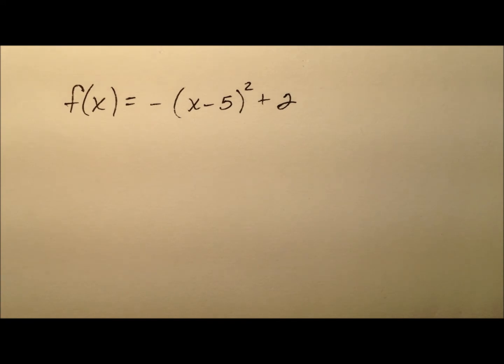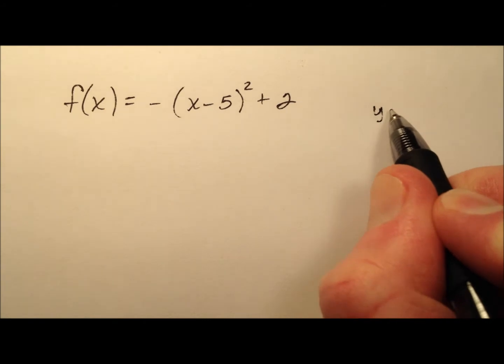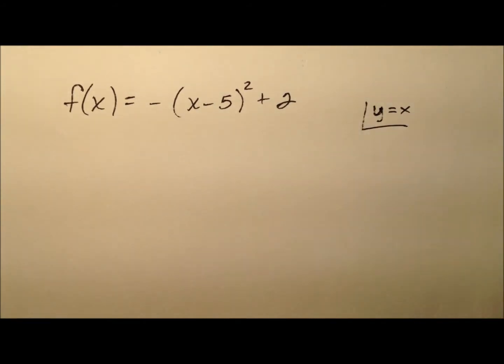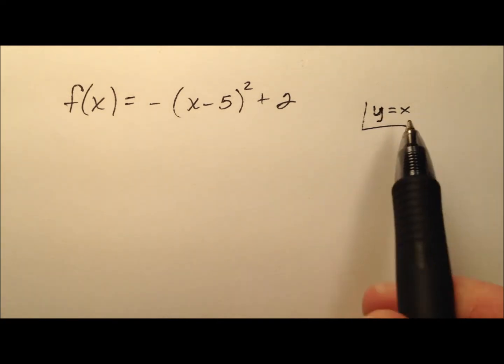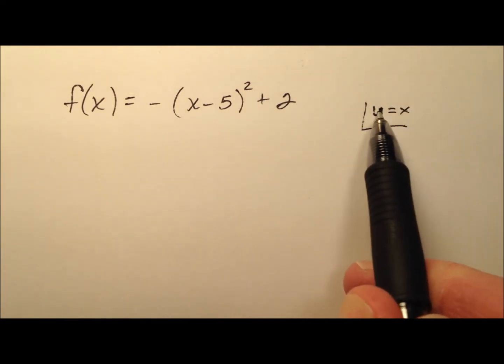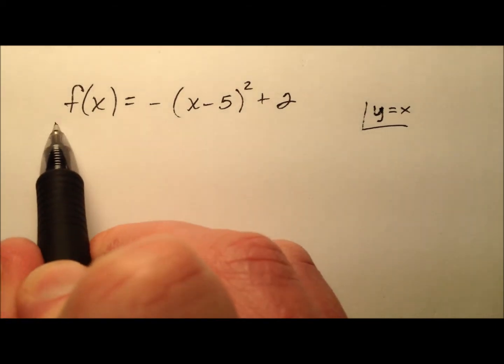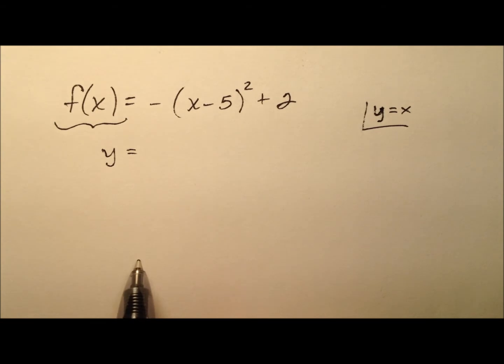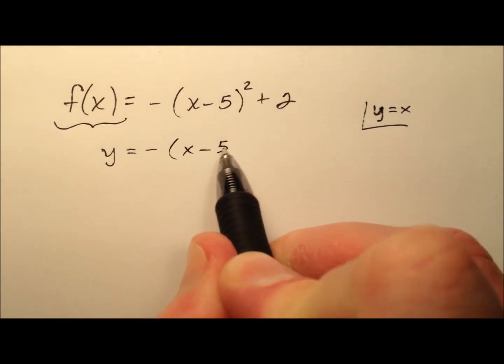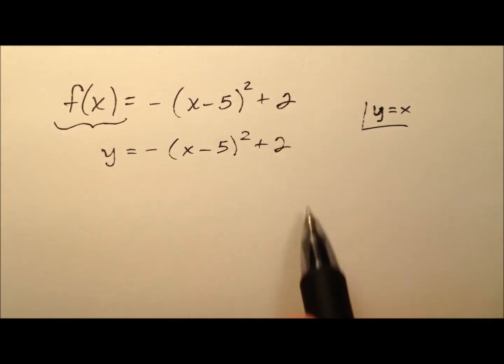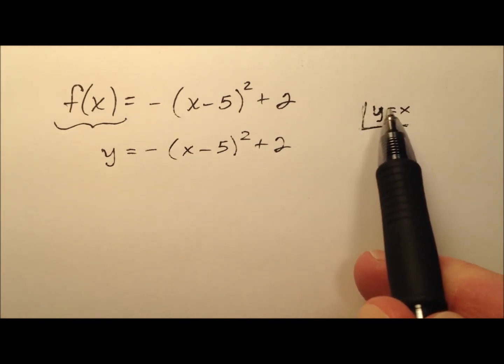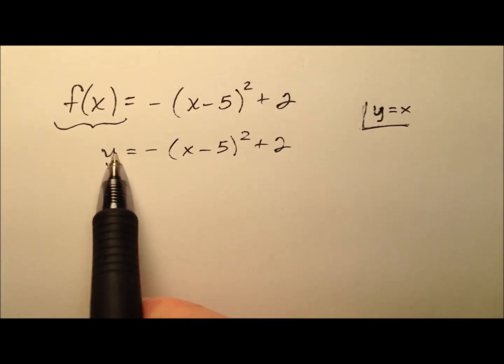So one relationship that a function has with its inverse, graphically speaking, is that they are symmetric about the line y equals x. So what that means is we can go ahead and find the inverse by exchanging the x and y in this function. But before we can do that, remember that the f is also the y variable. So we can rewrite this using strictly x's and y's. And then we can say, let's go ahead and use this relationship, y equals x, and we're going to exchange the x and the y variables.